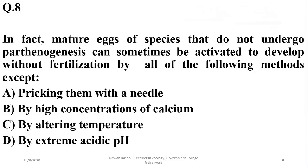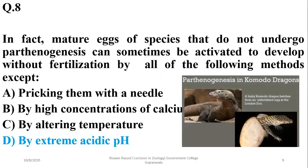Number eight: in fact, mature egg species do not undergo parthenogenesis but can sometimes be activated to develop without fertilization by all of the following methods except. Egg species can be stimulated for development to form the next embryo or individual by pricking them with a needle, by high concentration of calcium, or by altering their temperature. But extreme changes in pH can actually destroy these cells, so delta is not the way to activate such cells.